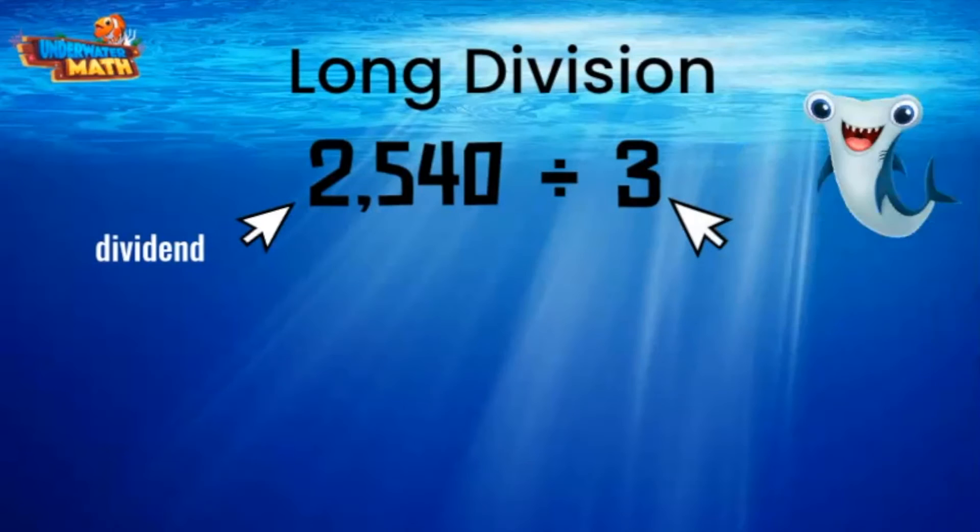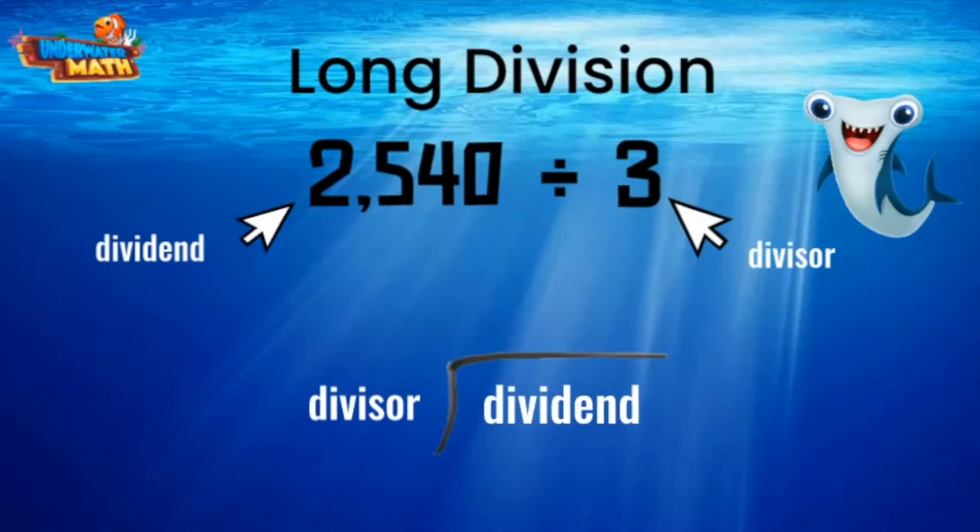And the second number is called the divisor. When we do long division, we use this symbol which I like to call the division house. The dividend gets to go inside the house and the divisor stays outside of the house.